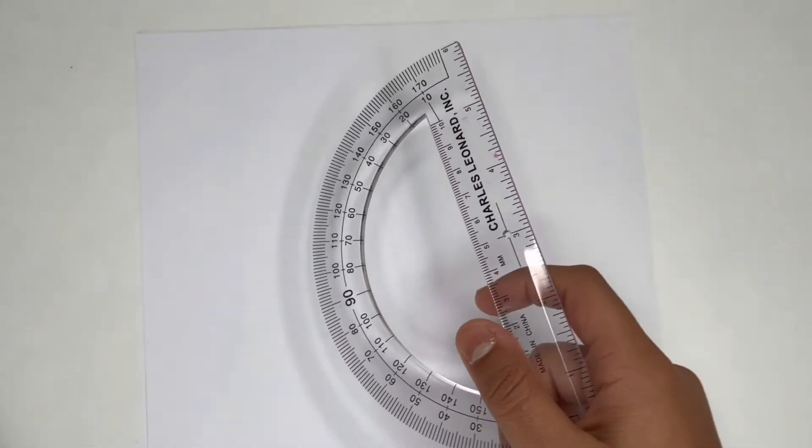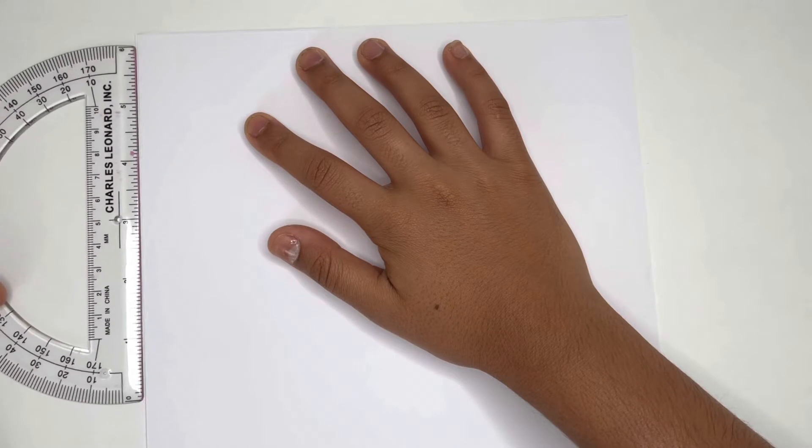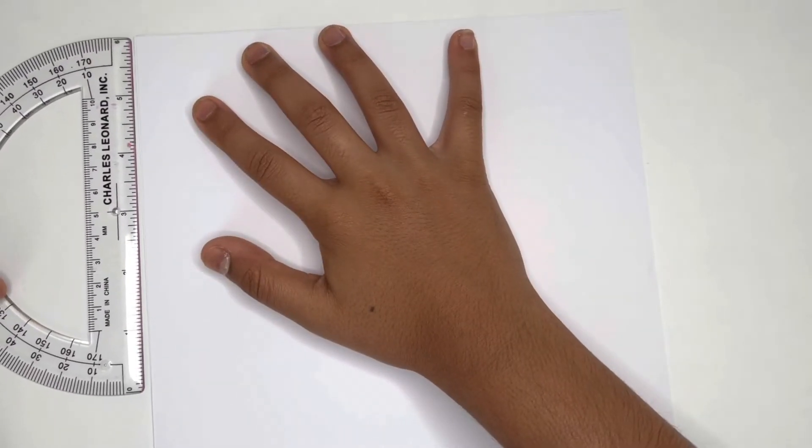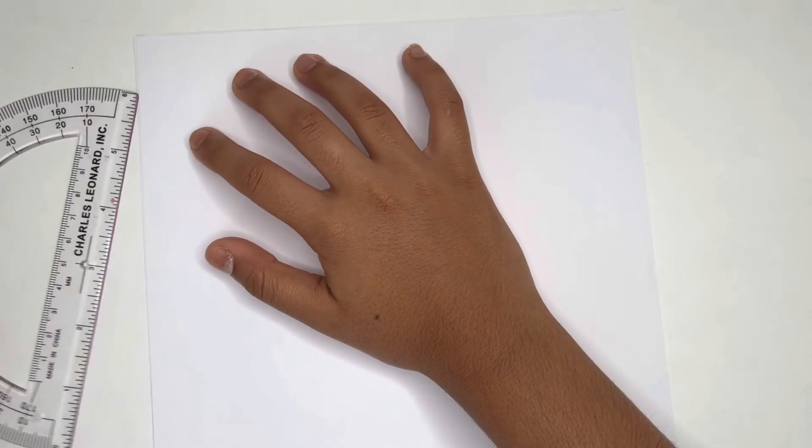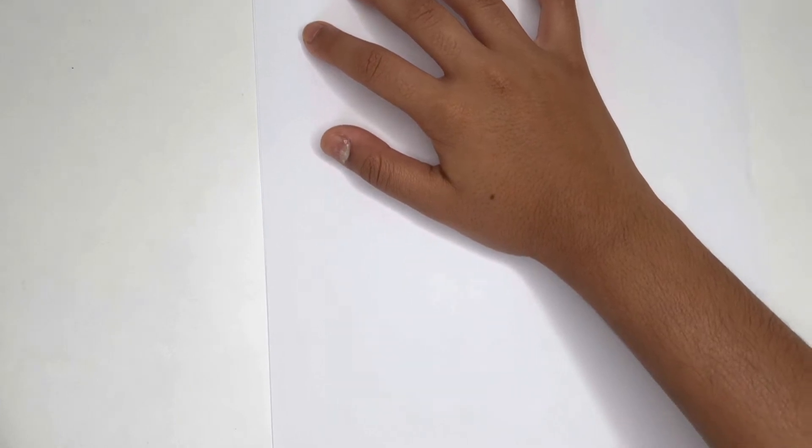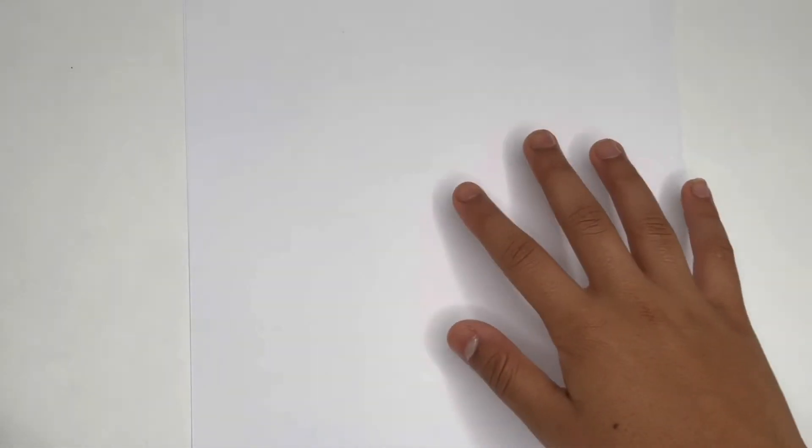For this step all you're going to need really is a pencil and a protractor. What I'm going to do is, since mine isn't big, I'm going to measure this paper in inches. I believe this is inches, so we're going to start. This is about six. I mean we can start at the bottom. I think starting from the bottom is probably the easiest. Let me move this up for you guys so you can see the bottom of our paper, which is right about here.